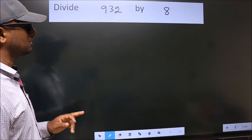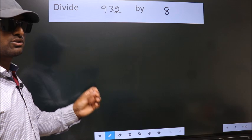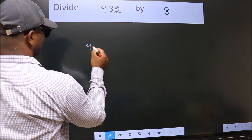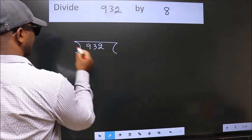Divide 932 by 8. To do this division, we should frame it in this way: 932 here, 8 here.